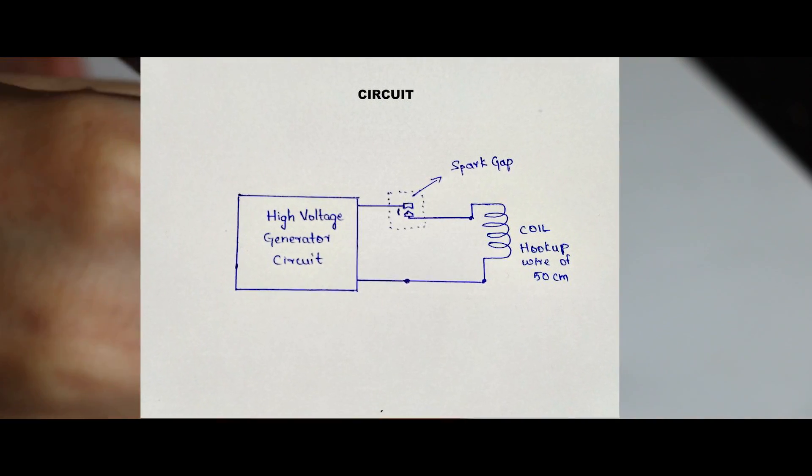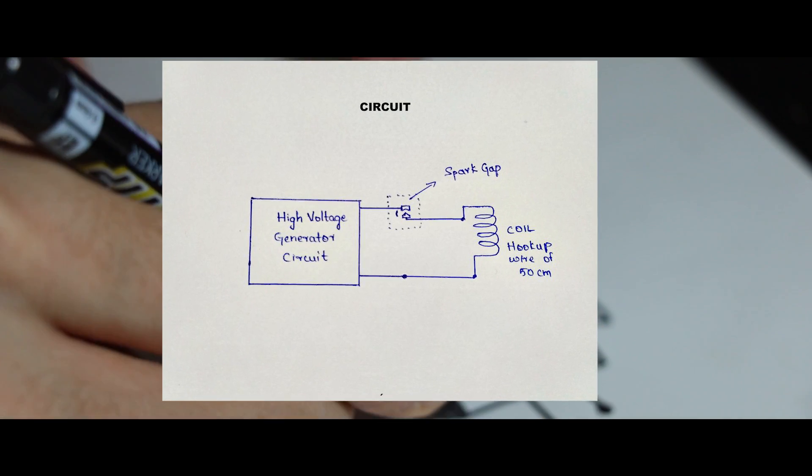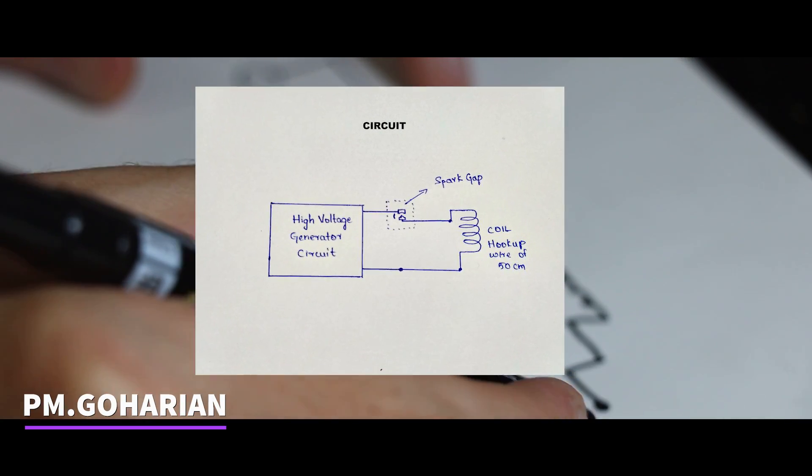As you can see, we just parallel the high voltage generator and coil, but in the way of current we use a spark gap.